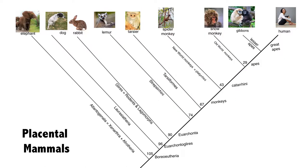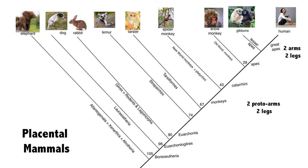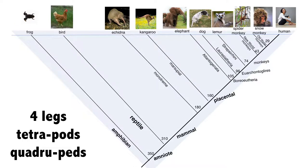Now, here are the placental mammals again — all have hair, with 105 million years of common ancestry. Let's talk about something else, not just hair: let's talk about legs. You notice that they all have legs. To be more precise, we humans say we have two arms and two legs, but if we look at our ancestors, we see that those arms used to function as legs — they're kind of proto-legs. But if you look deeper into the tree, rabbits, dogs, and elephants all have four legs. All of these creatures can be considered quadrupeds. And the frog on the left also has four legs, so all of these in the blue triangle are tetrapods.